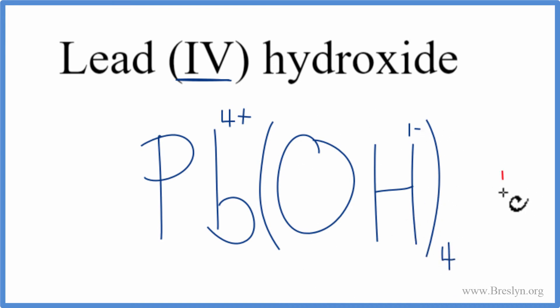4 times 1-, that gives us 4-. 1 times 4+, 4+. Those add up to zero. They give us a net charge of zero. This is the correct formula for lead(IV) hydroxide.